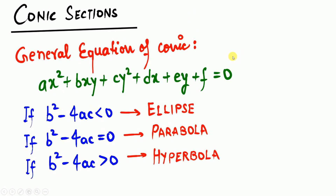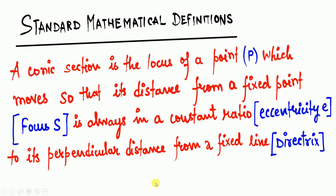Now let's enter into the mathematical terms. The general equation of a conic is: Ax² + Bxy + Cy² + Dx + Ey + F = 0. When any equation is given, compare the values of A, B, C, D, E, F to get all the coefficients. Then find B² − 4AC. If B² − 4AC is less than zero, it is an ellipse; if equal to zero, it is a parabola; and if greater than zero, it is a hyperbola.